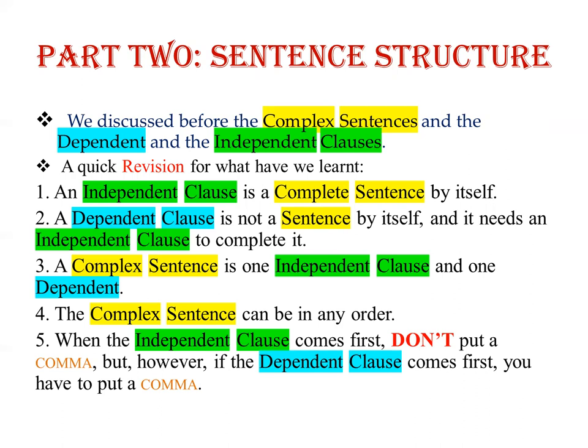Quickly: an independent clause is a complete sentence by itself. From the name, 'independent' means it can stand alone and doesn't need anything else. A dependent clause is not a sentence by itself and needs an independent clause to complete it. 'Dependent' means it depends on something else. When we join the dependent clause with the independent clause, we create a complex sentence.